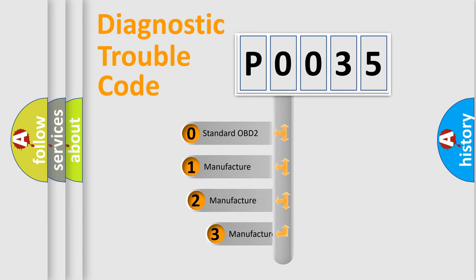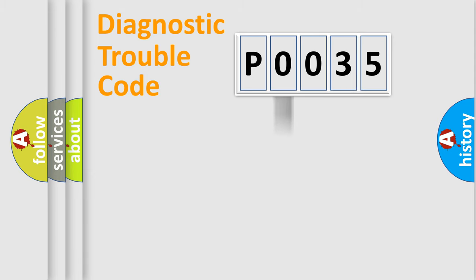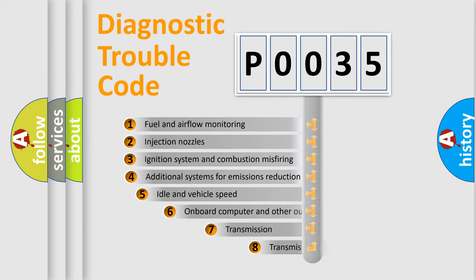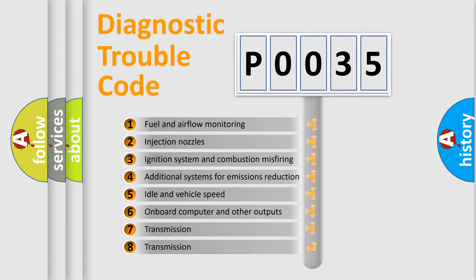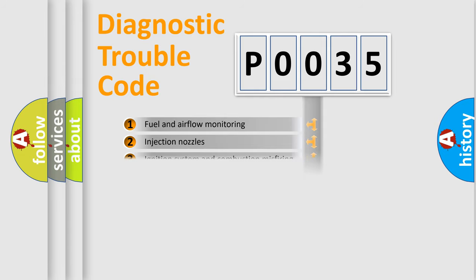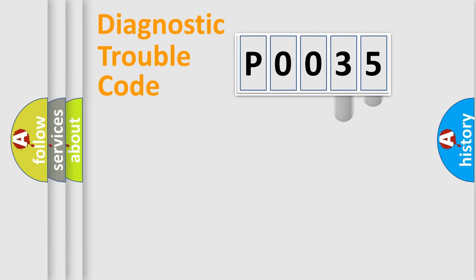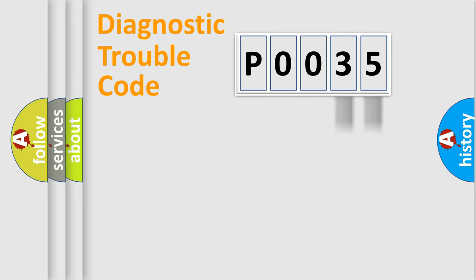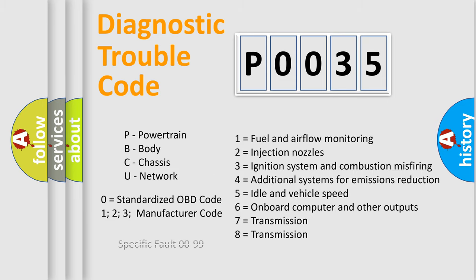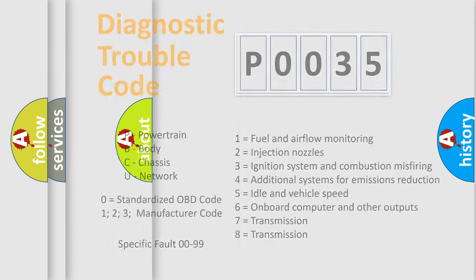If the second character is expressed as zero, it is a standardized error. In the case of numbers 1, 2, or 3, it is a manufacturer-specific error expression. The third character specifies a subset of errors. This distribution is valid only for the standardized DTC code. Only the last two characters define the specific fault of the group, and this division is valid only when the second character code is expressed by the number zero.